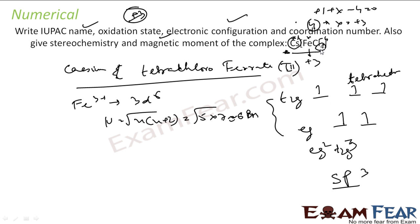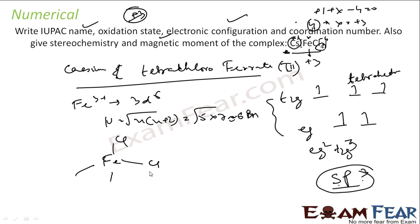The hybridization is sp3 because the coordination number is 4 — it needs 4 orbitals: 1s + 3p. So sp3 hybridized, giving a tetrahedral geometry. The stereochemistry: Fe is at the center with four Cl ligands. This structure is optically inactive due to symmetry — it looks the same from all sides. There are no isomers in this case.